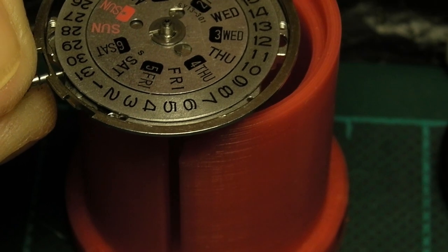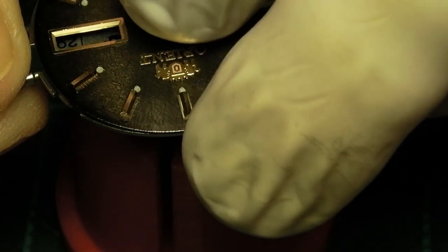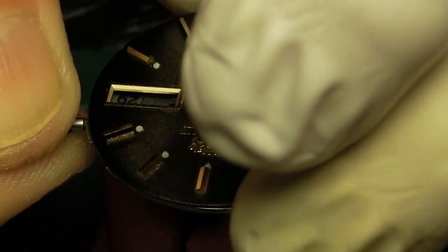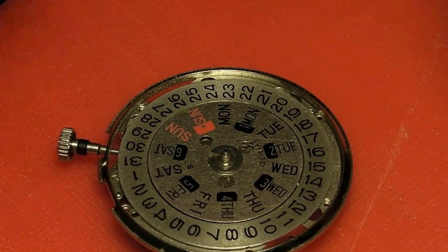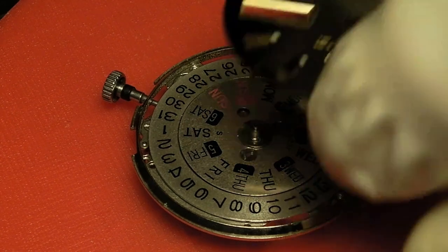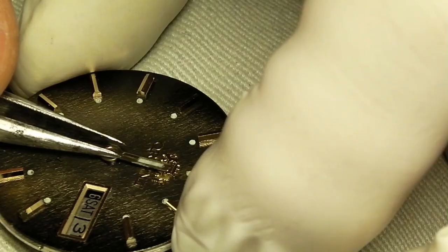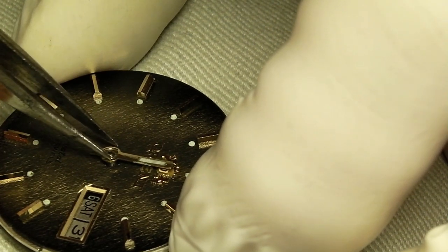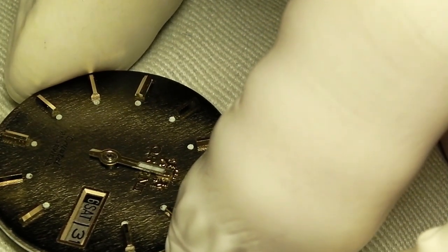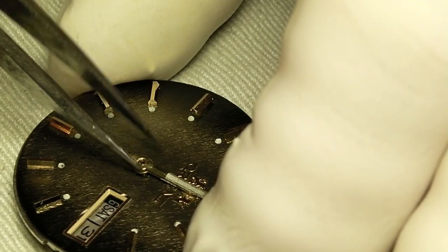Next to be fitted is the dial ring. I have actually got it fitted upside down at this point. Realizing this later, I switch that around. It has to be fitted this way up or it will not sit in the case correctly and the rapid date advance pusher will not clear the ring. It needs to be fitted with the flat side uppermost as you're looking down at the movement in the case.